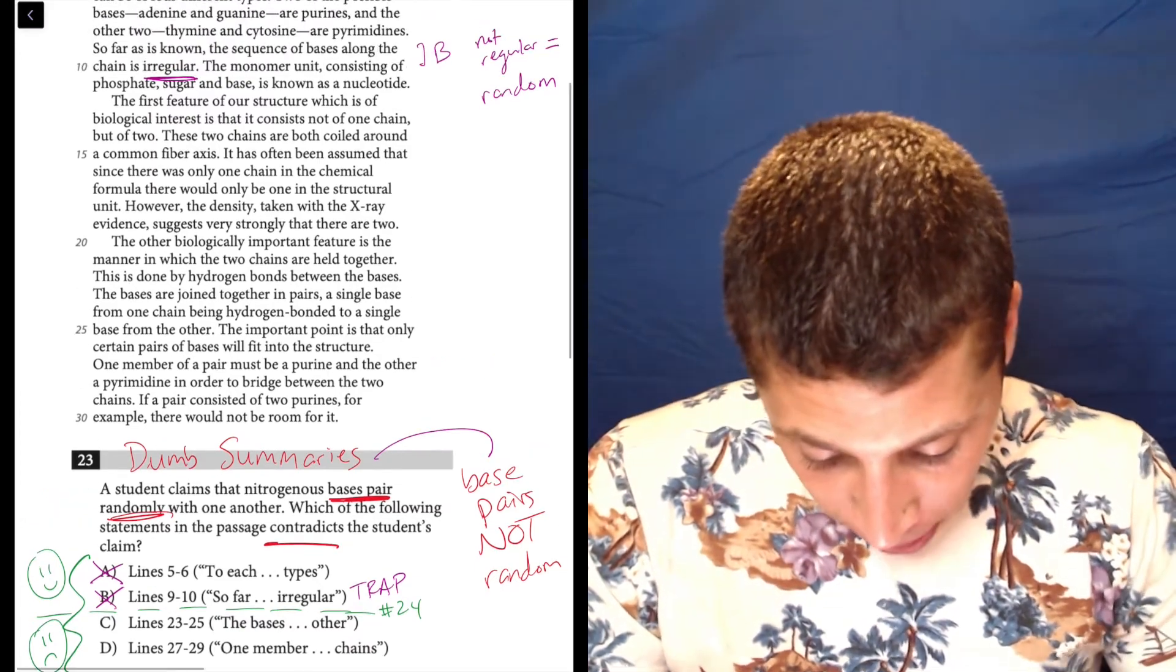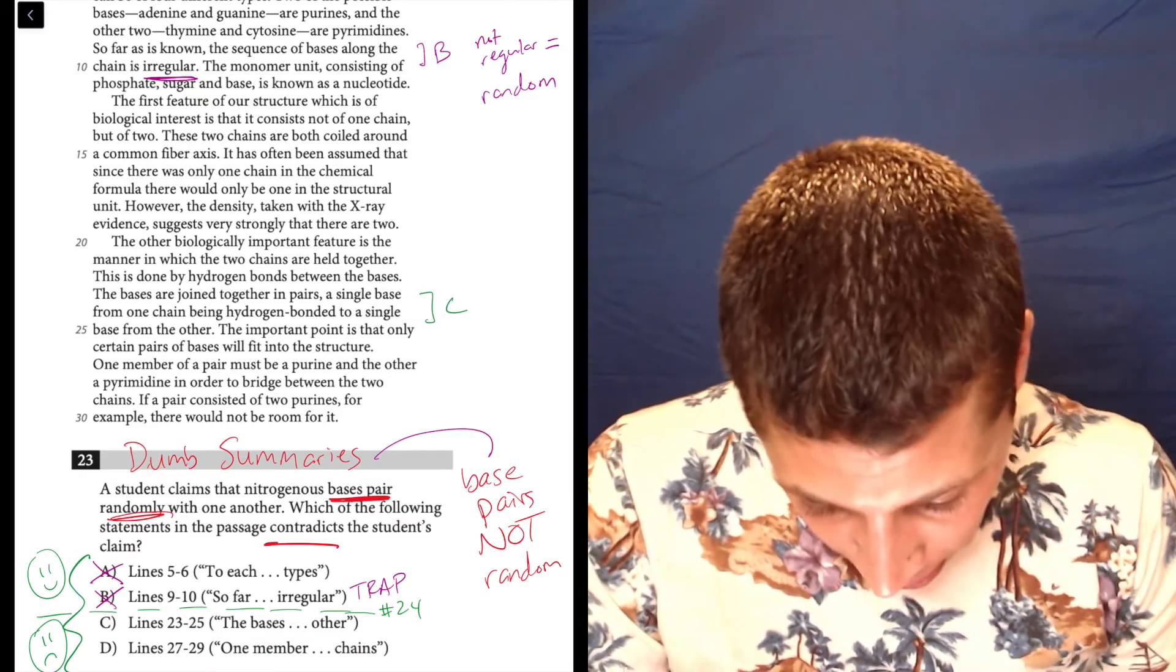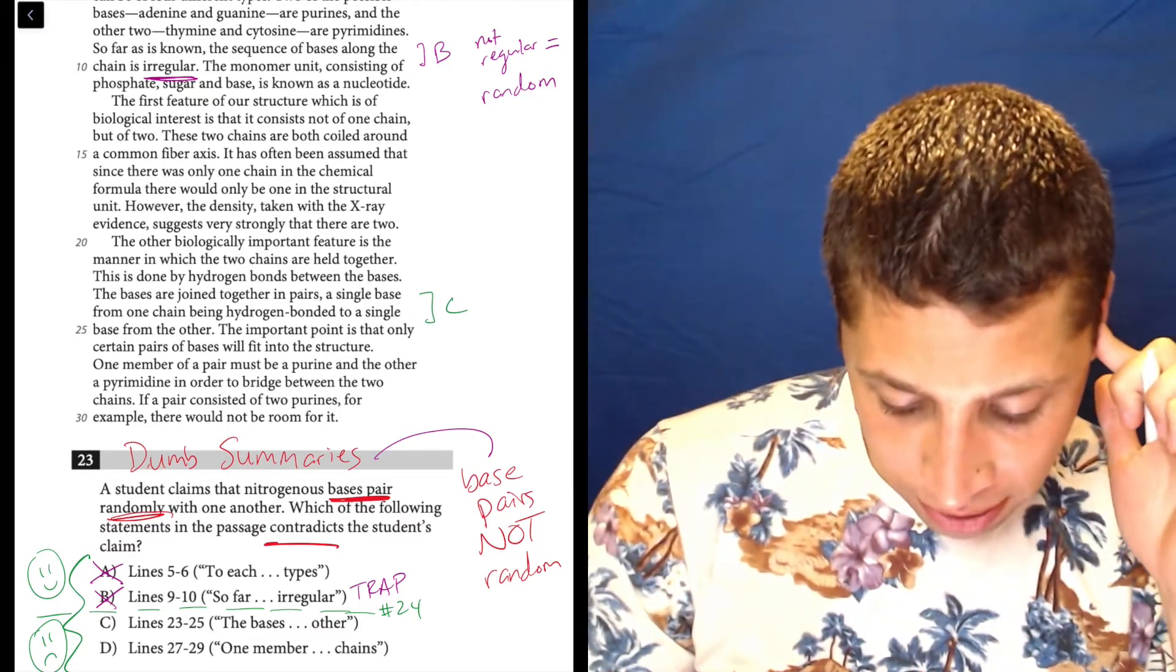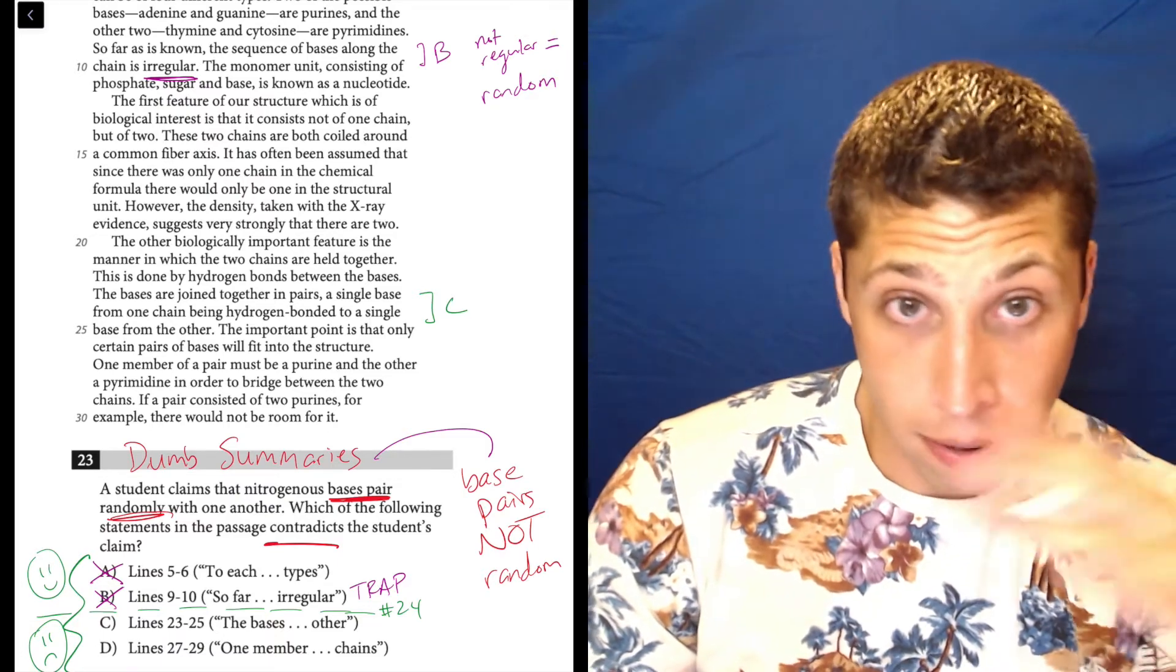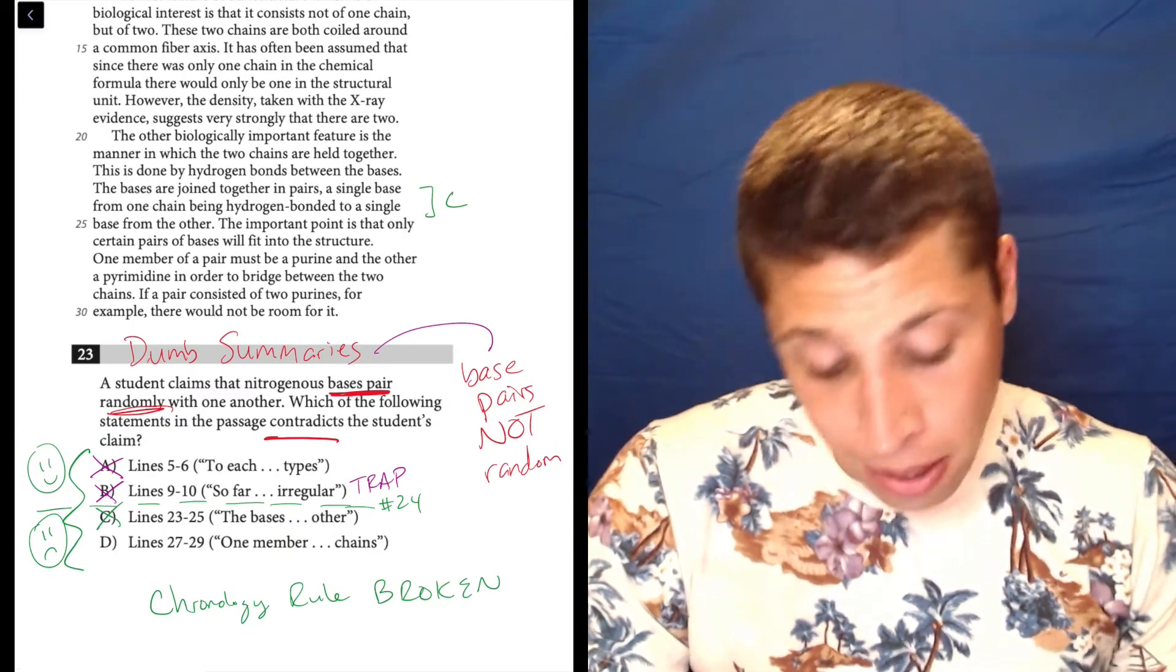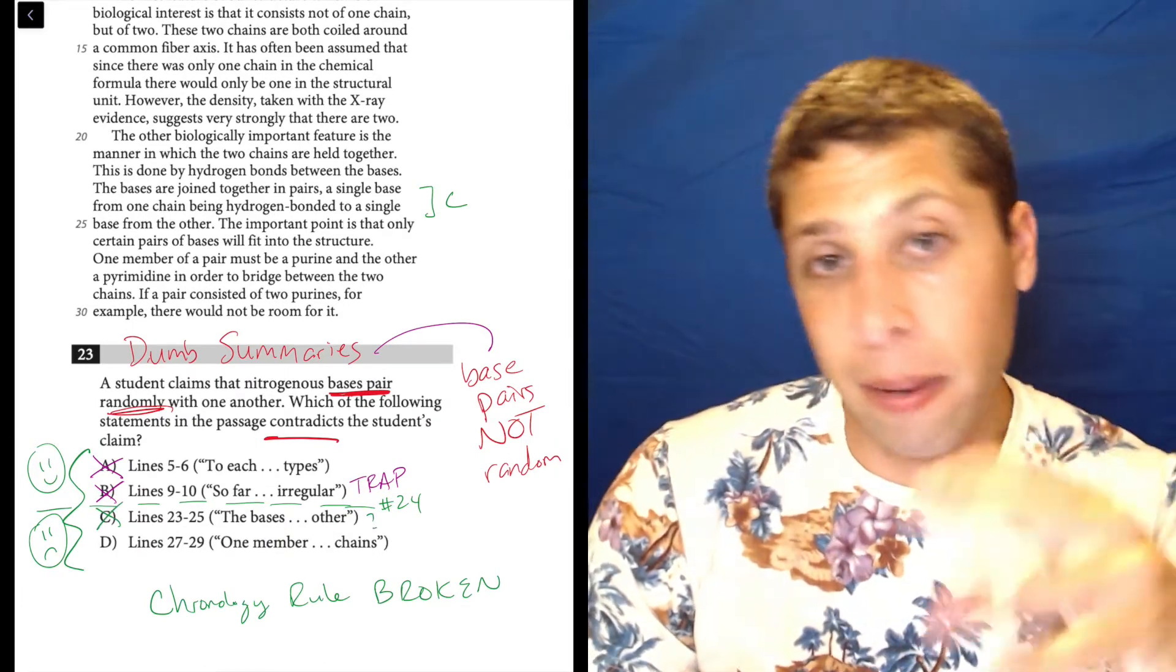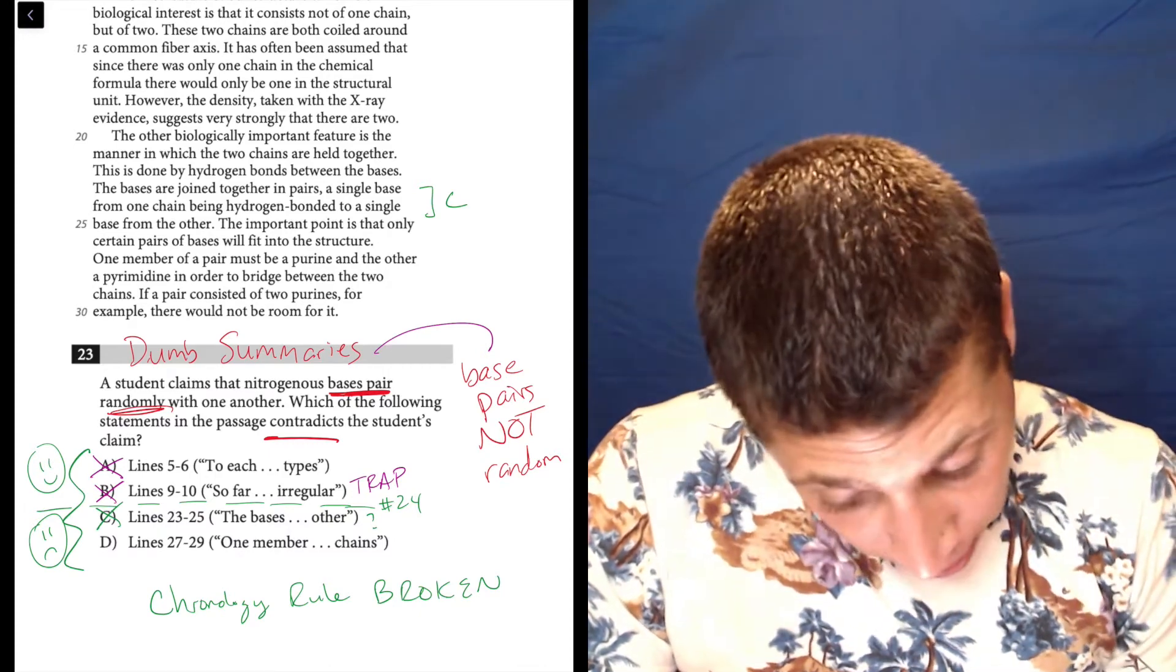So let's go to C. 23 to 25. The bases are joined together in pairs. A single base from one chain being hydrogen bonded to a single base from another. Well, that doesn't seem random. They're just throwing some science garbage at me. So maybe you're confused and you keep that in, but it doesn't seem to say anything about randomness. 27 to 29. Hope this is right.